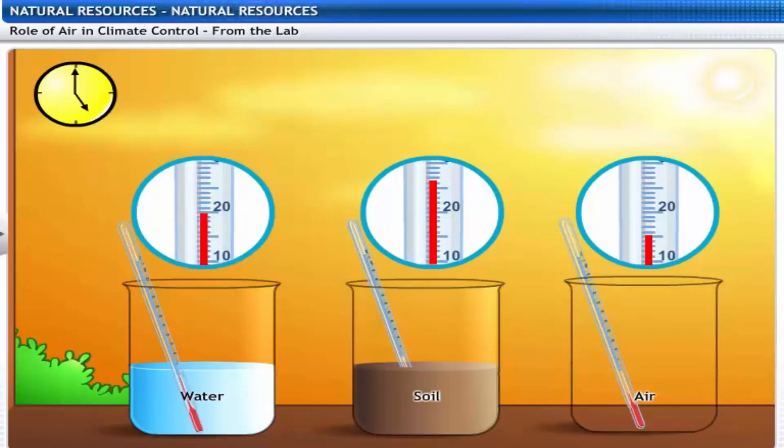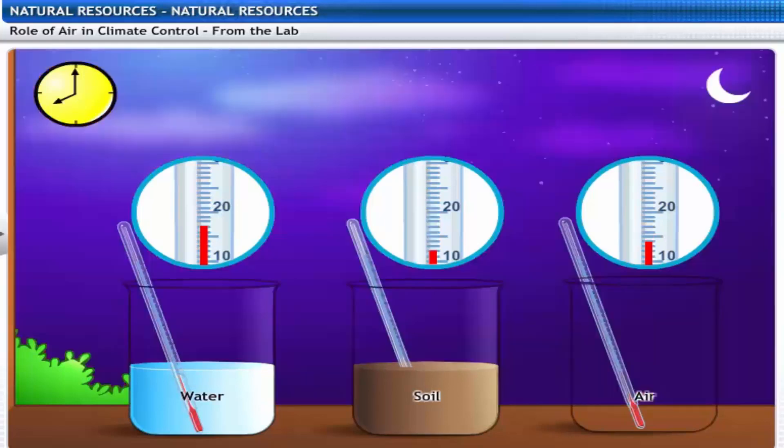If we perform the same experiment under shade, this is how the temperature stands. This time, the temperature reads more in the first beaker than in the others. This indicates that soil gets cooled faster than water and air.